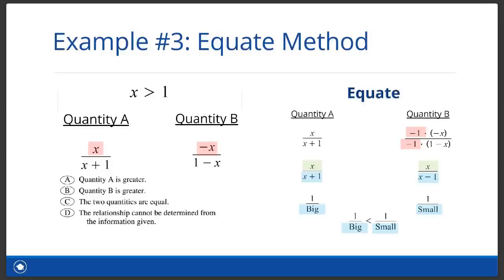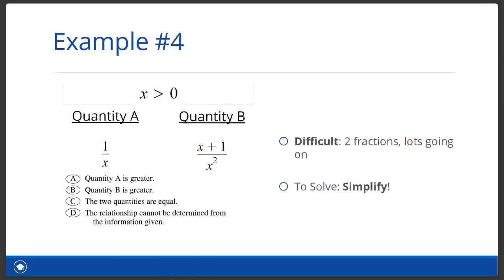Remember, when you have two different looking fractions, try simplifying using the equate method to make either the tops or the bottoms the same. All right, let's do one last example here. Example number four. Here we compare one over X to X plus one over X squared. Like before, this looks kind of complicated too. We have two different looking fractions. Tops are different and the bottoms are different. If we start plugging in numbers, we'll have to do it multiple times till we're satisfied that we can't get more than one answer from A, B, and C. So what should we do? You guessed it, the five strategies to simplify.